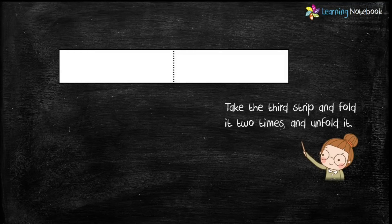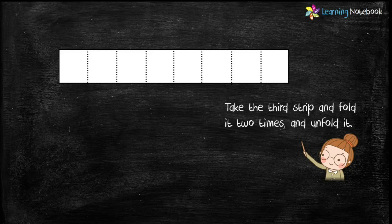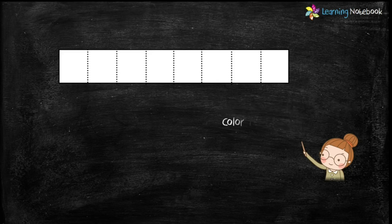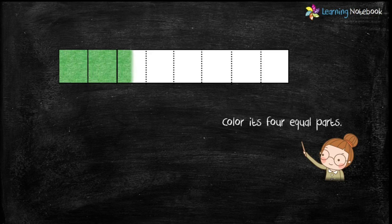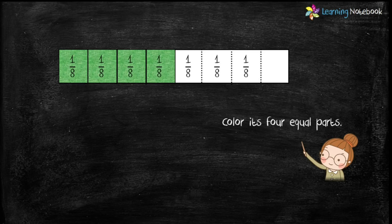Next, let's take the third strip and fold it 2 times. Unfold it and you will find that the strip has been divided into 8 equal parts. Let's color its 4 equal parts and then write the fraction of each part, which is 1 by 8.